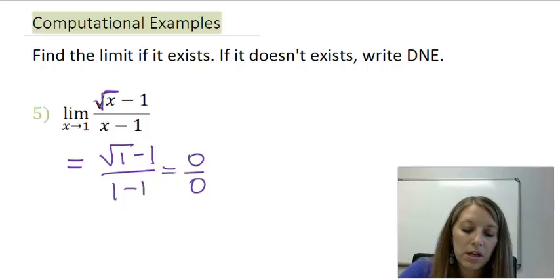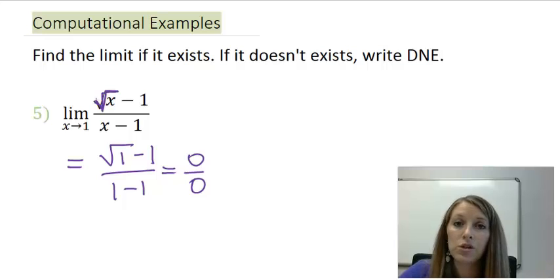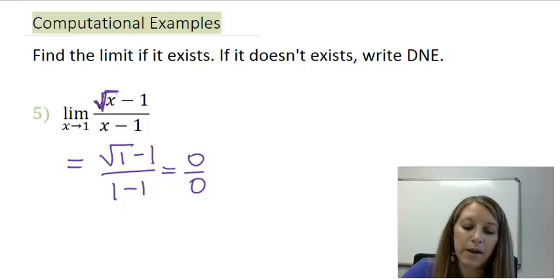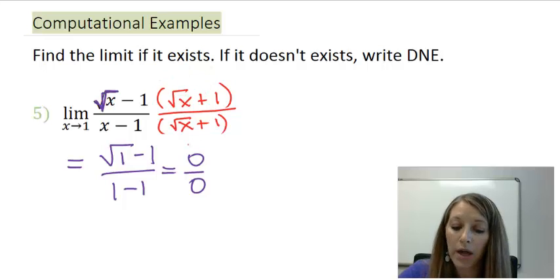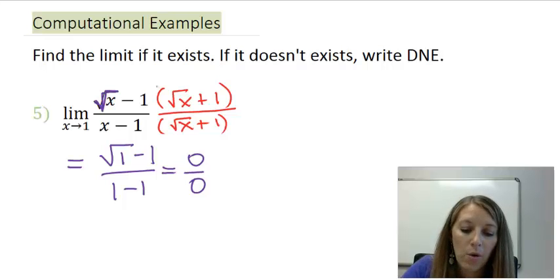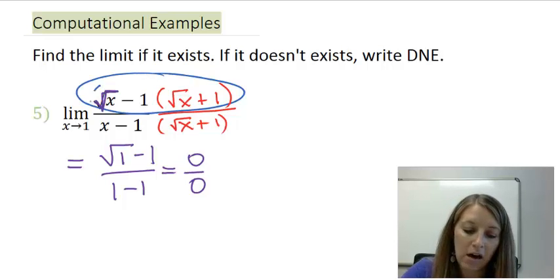Since there is a square root in this problem, the more work that we need to do is we need to rationalize. What rationalize means is it means to multiply by the conjugate. What conjugate means is the exact same expression but an opposite sign in the middle. I'm going to multiply by the conjugate of the numerator here because my square root is in the numerator. So, I'm going to multiply by that exact expression but with an opposite sign. Instead of square root of x minus 1, I'm going to multiply by square root of x plus 1. Now, I can't just multiply it by it because that would actually change the problem. So, I need to multiply by it in the denominator as well because really I'm multiplying by a very ugly version of 1.